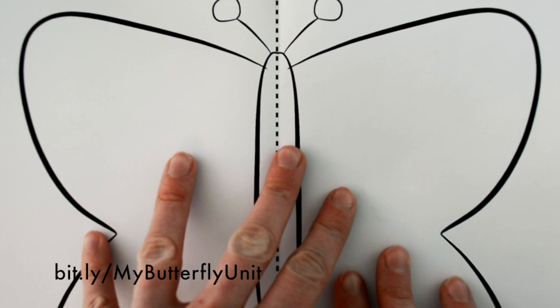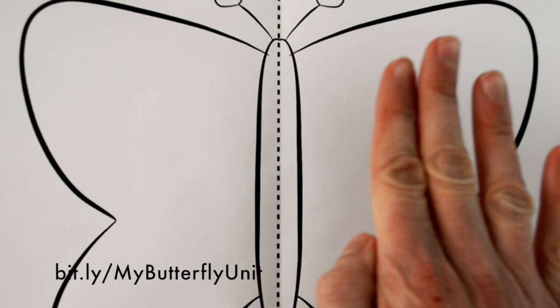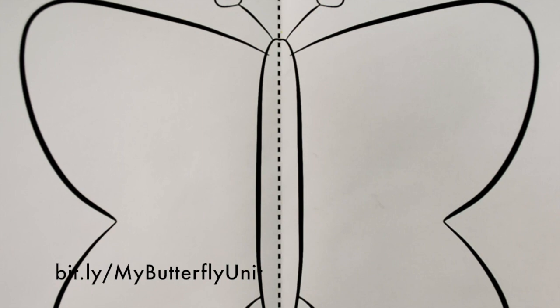And then what I tell them to do is I tell them to make a design on just one side of the butterfly. It doesn't really matter which side that they choose but they're supposed to make the design on just one side. And I also tell them that they need to do it pretty quickly because the paint will dry and then the activity won't work.